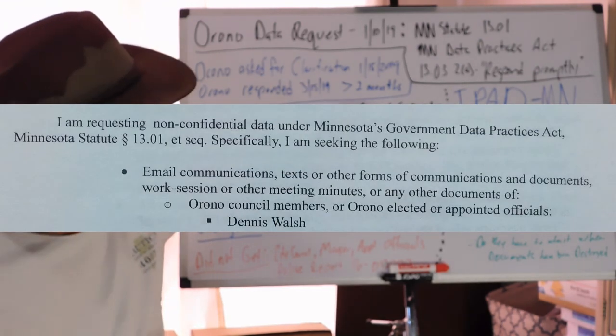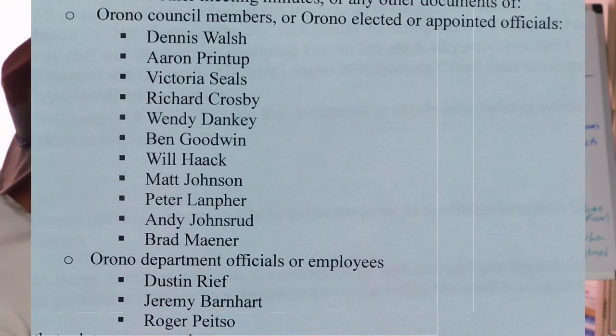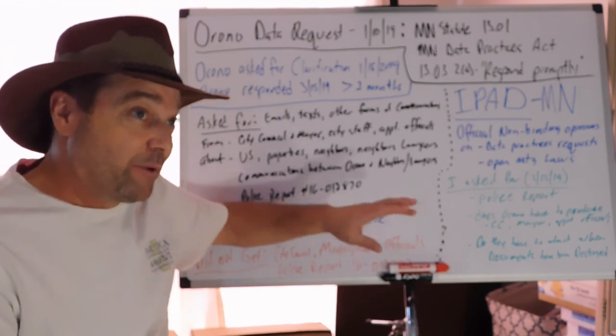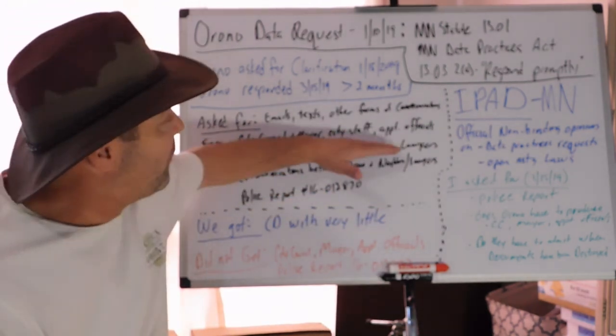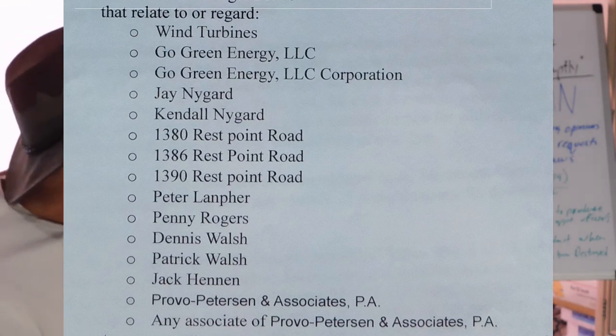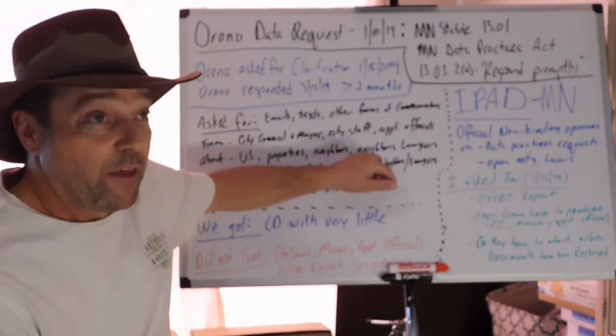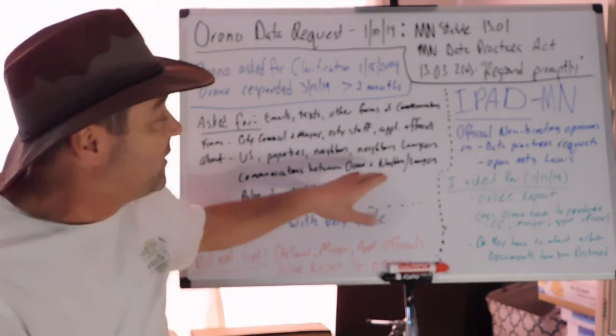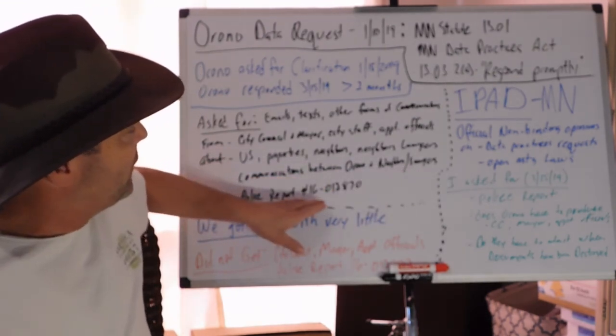My data request is asking for emails, texts, other forms of communications from city council, mayor, city staff, and appointed officials. These are all government officials, all the stuff they do is public data. What I was asking about was us, me, my wife, our property, other properties nearby, neighbors and their lawyers. We're in lawsuits with these people, and if Orono's communicating with these people then that's public data. We're also asking for a specific police report that the city refuses to give us, number 16-012870.